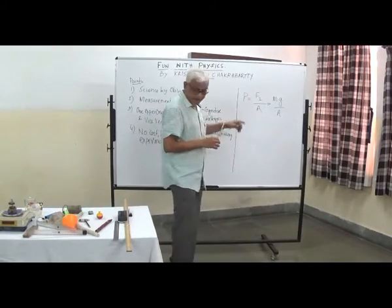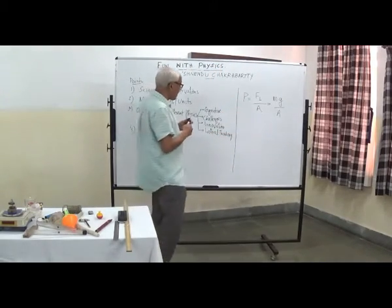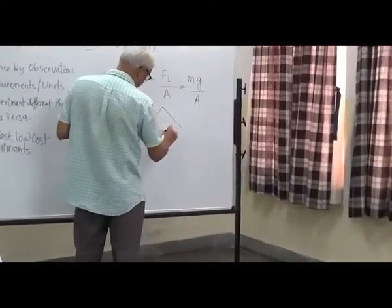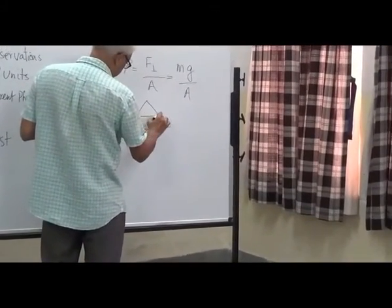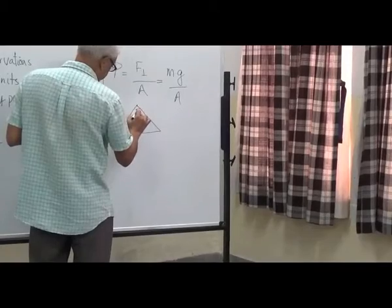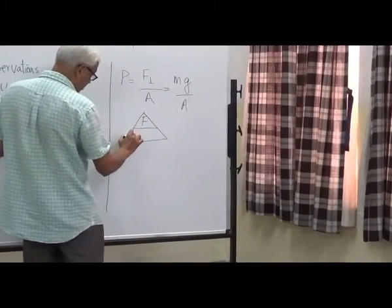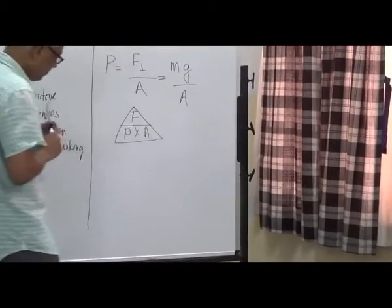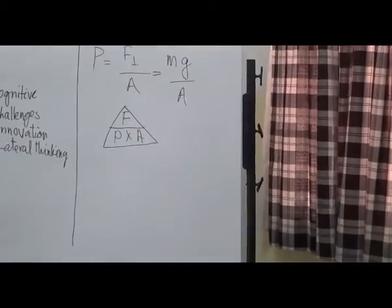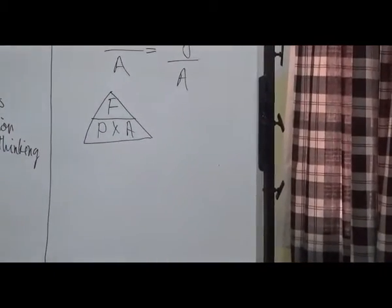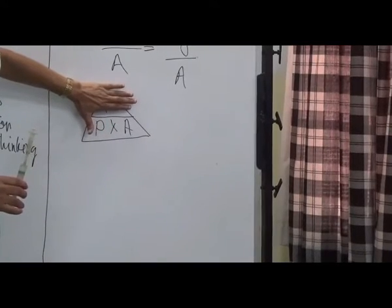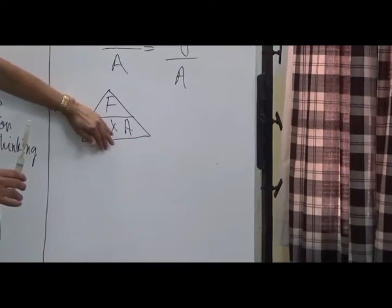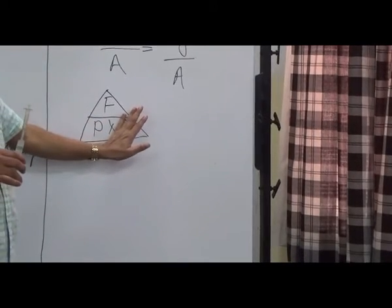You can write in a triangle form, which is more useful to remember things. P cross A. If you want to measure force, you cover force which is equal to P cross A. If you want to find P, then F by A, and if you want to find A, F by P.